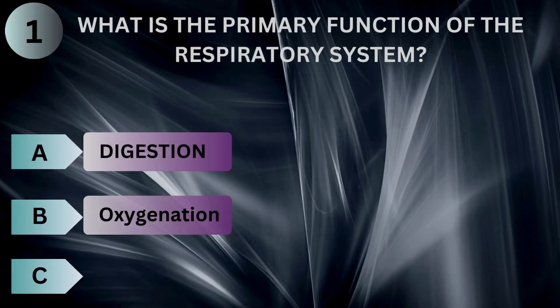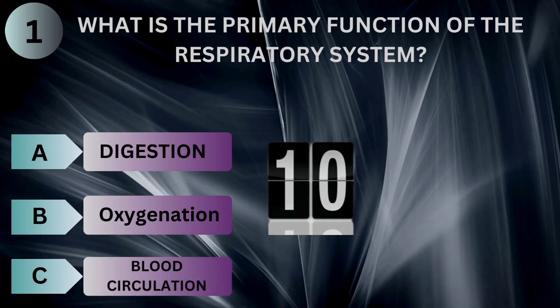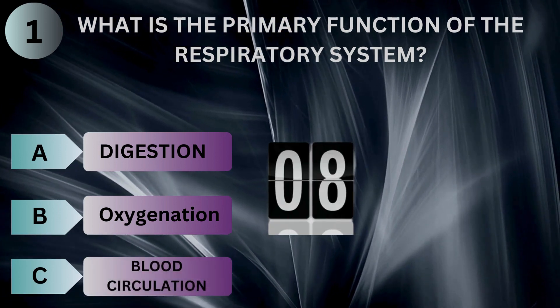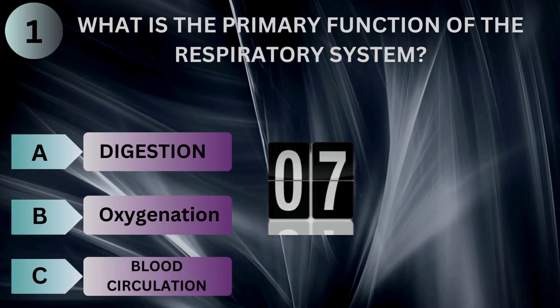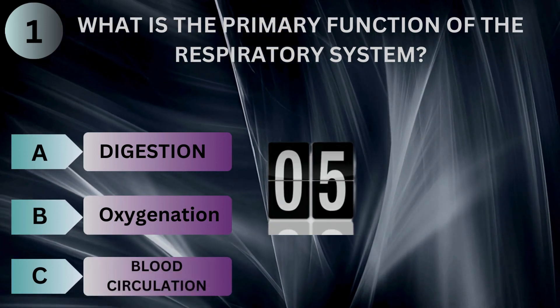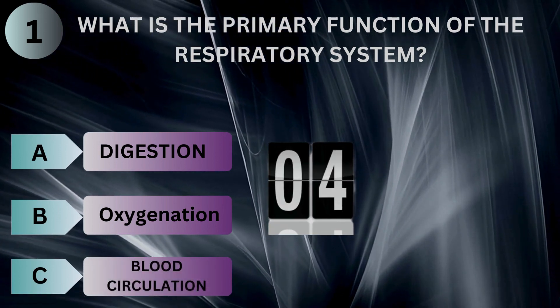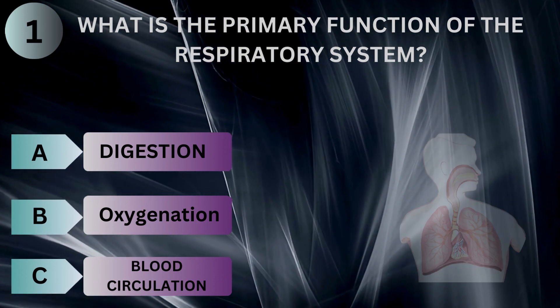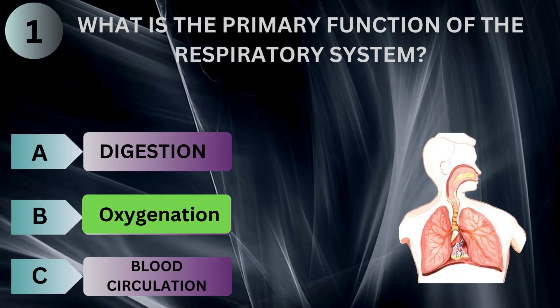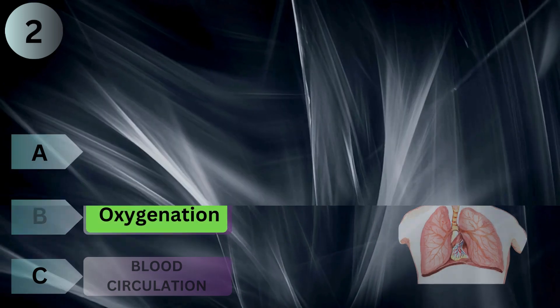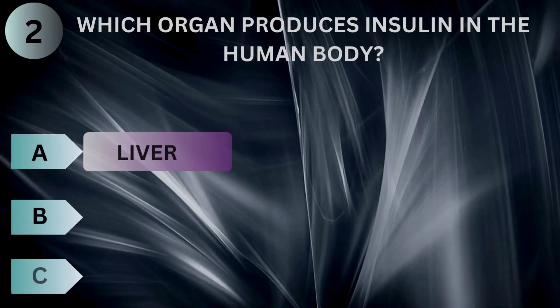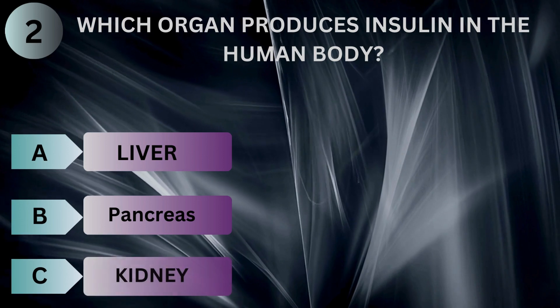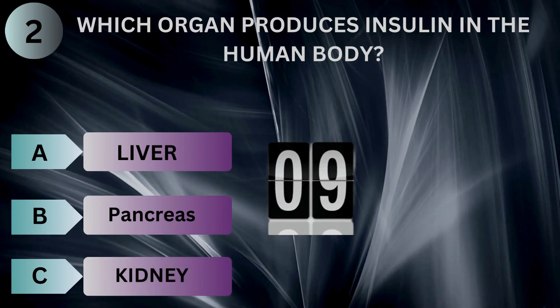What is the primary function of the respiratory system? Which organ produces insulin in the human body?